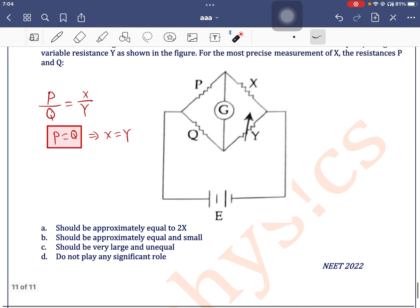Now, options are should be approximately equal to 2X, this is wrong, should be approximately equal and small, yes. The resistances P and Q should be approximately equal and small.